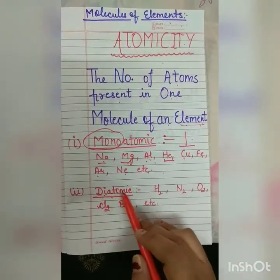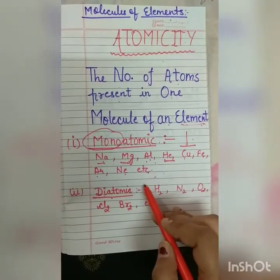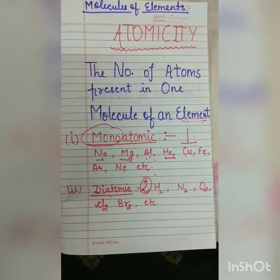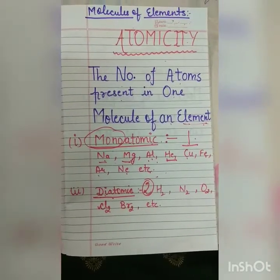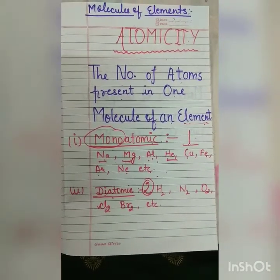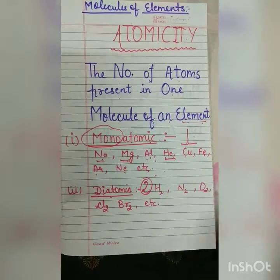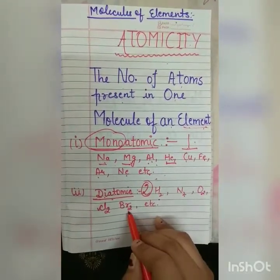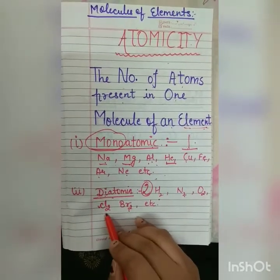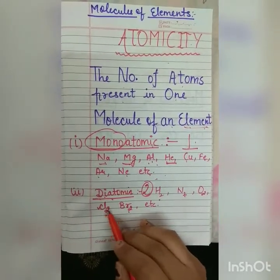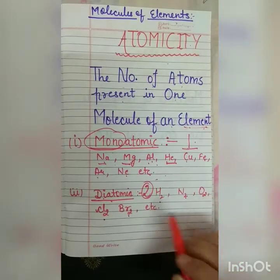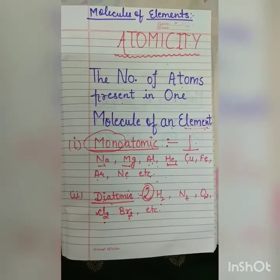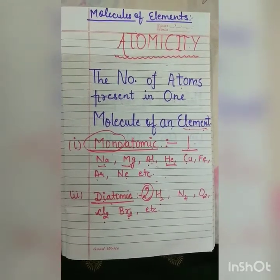The next we are having diatomic. Di means two. It means the molecule of the same element in which two atoms combine together. For example, H2, N2, O2, Br2 that is bromine, Cl2 that is chlorine. As you can see, two atoms of these elements combine together, so their atomicity is two.